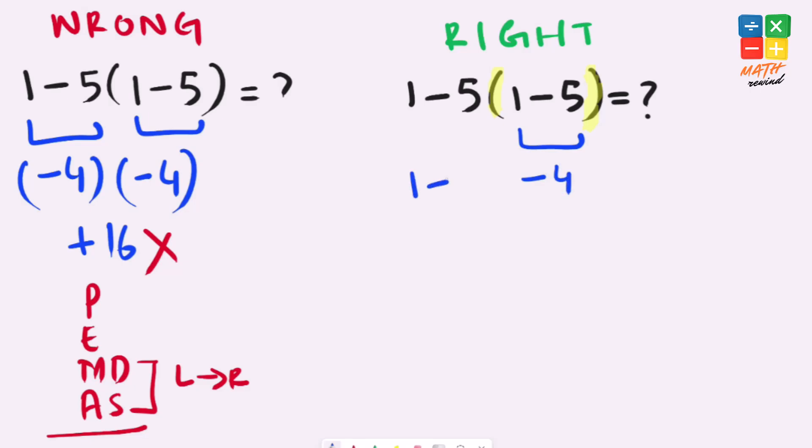Our expression simplifies to 1 minus 5 times negative 4. Now we have multiplication and a subtraction operator present, but according to the rules, multiplication takes priority. So we'll solve 5 times negative 4.